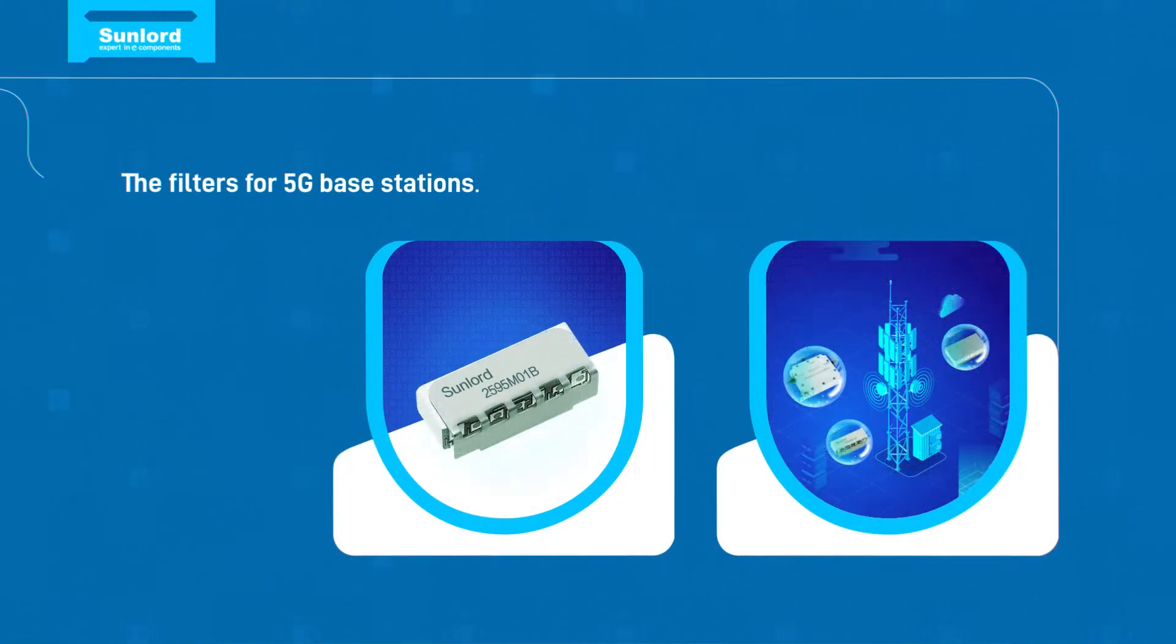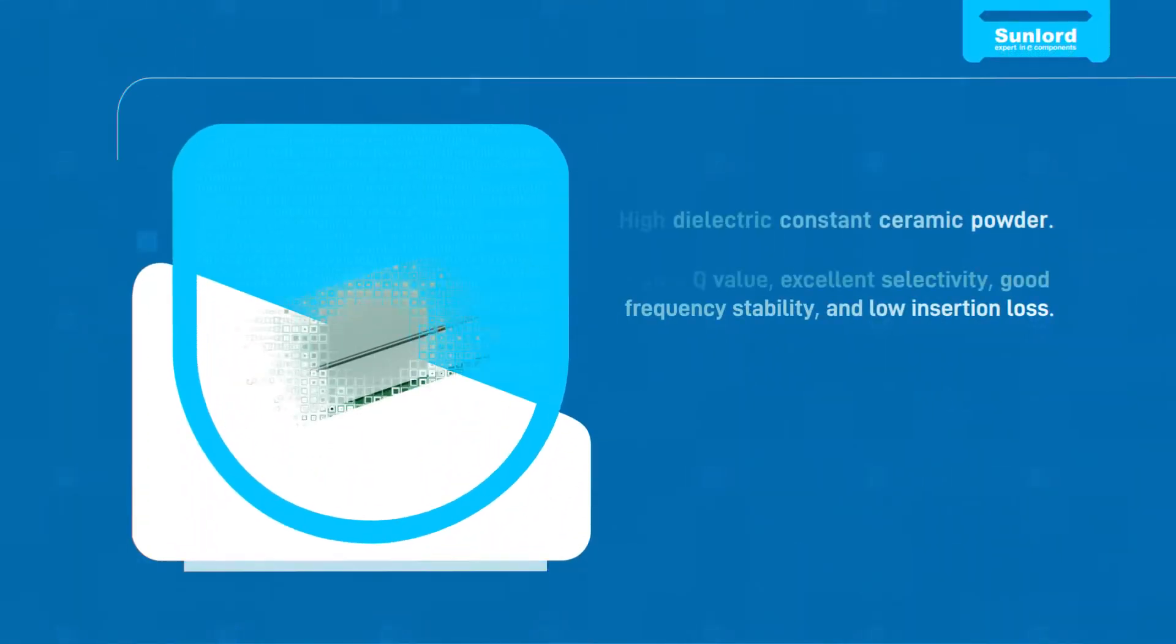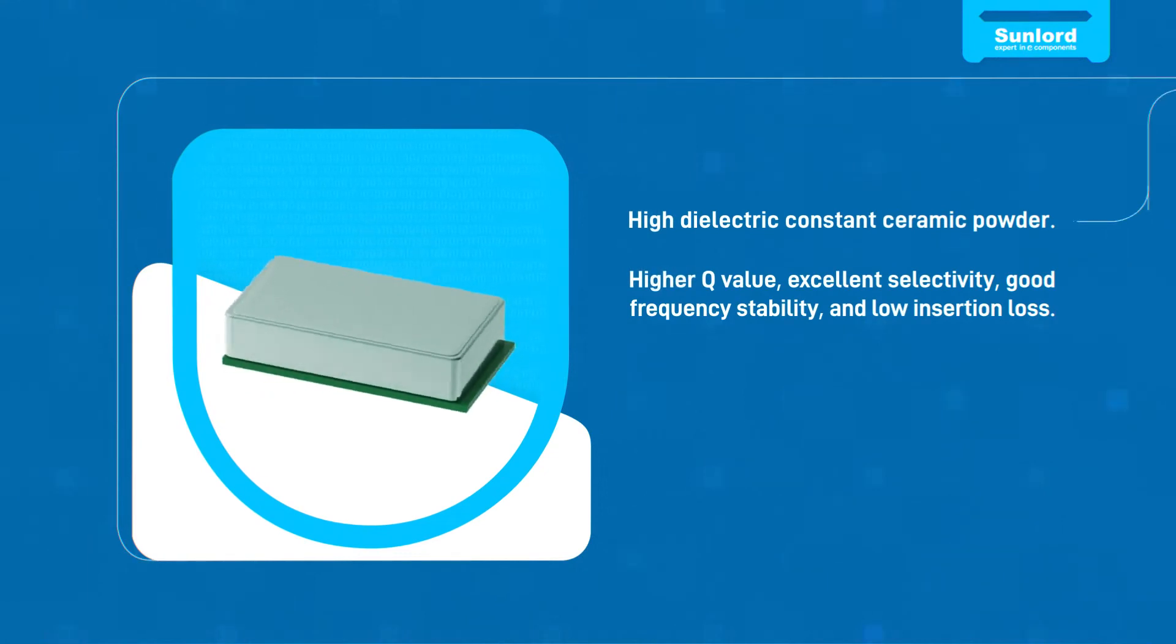The integration of massive antennas and 5G base stations using massive MIMO requires filters to be more miniaturized and lightweight. Sunlord ceramic dielectric filters are manufactured using high dielectric constant ceramic powder.